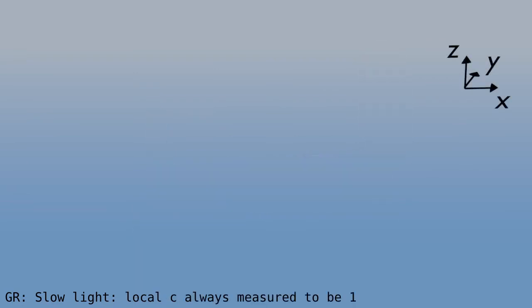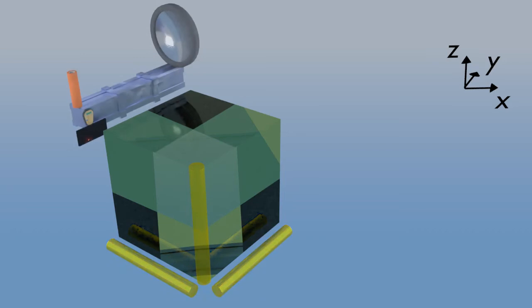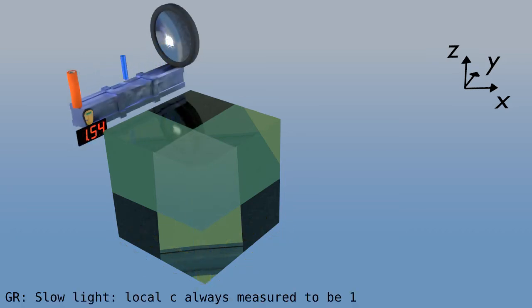So, with this device in hand, let's take a minute and look at how locally we always measure the speed of light to be one, even when space and time deform. Our hypervoxels are one unit long on each side, and locally we measure the speed of light to always be one in each direction because the clock always stops at two units of time.